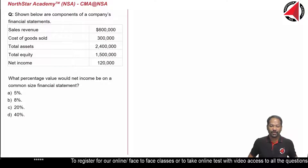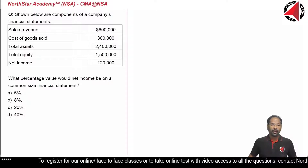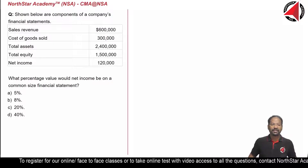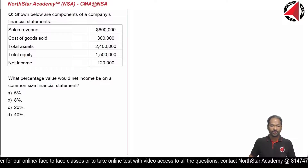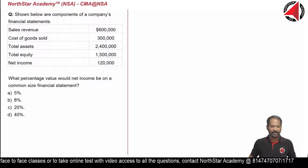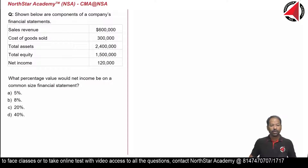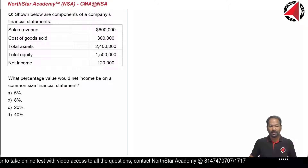Welcome to North Star. Shown below are the components of a company's financial statements: sales revenue, cost of goods sold, total assets, total equity, and net income. What percentage value would net income be on the common size financial statements?